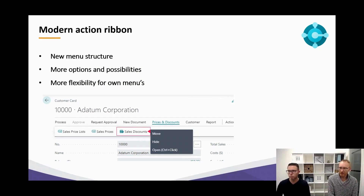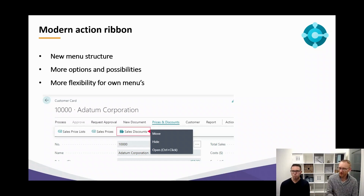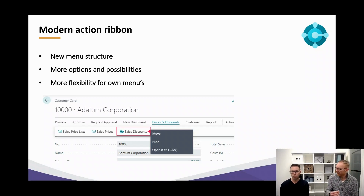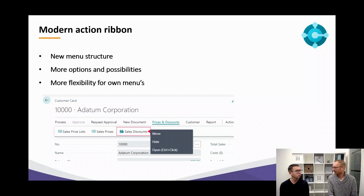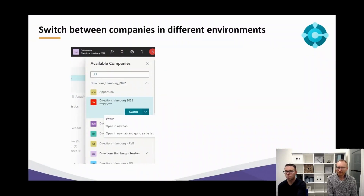The first one is the action ribbon. It still looks familiar, but what you can see is that they have reorganized some functions — taken out the duplicates. Sometimes you have functions that appear in several places in the action ribbon, so they regrouped the actions. What has improved now is that you can modify the structure and sequence of the actions in a similar way that you can with fields on pages and cards. So with drag and drop you can modify your entire action bar, and that's something most users will welcome.